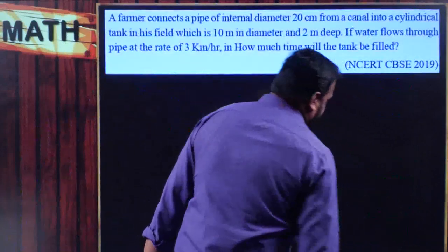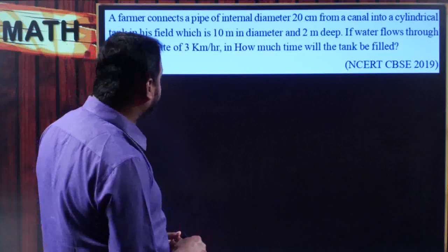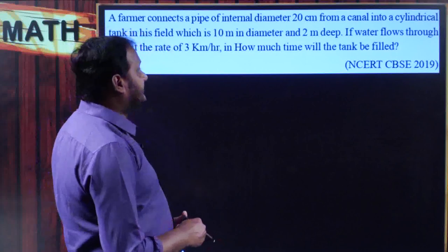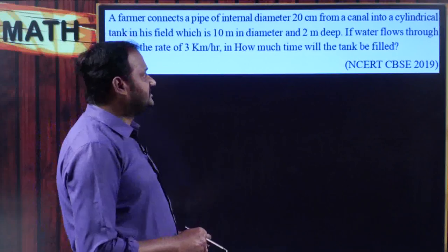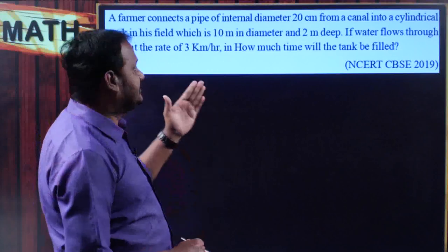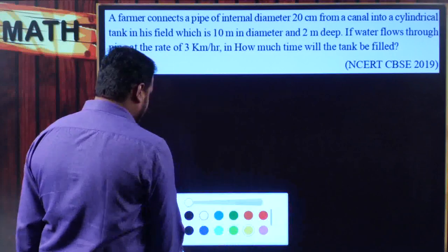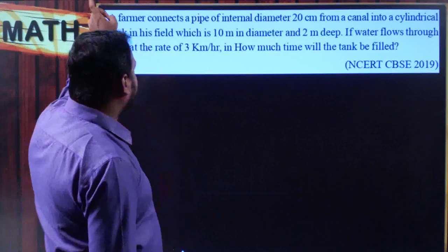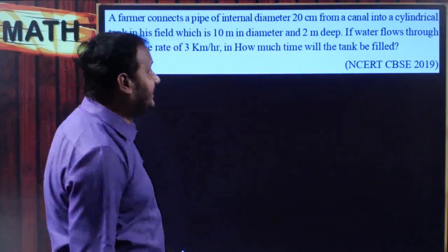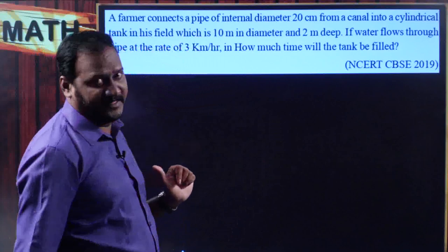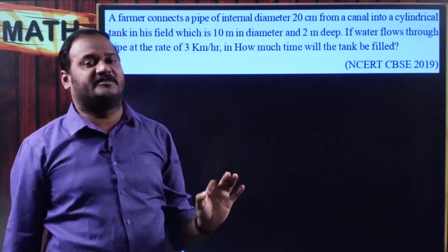Let us move on to the next problem. A farmer connects a pipe of internal diameter 20 centimeters from a canal into a cylindrical tank in his field, which is 10 meters in diameter and 2 meters deep. The shape of the pipe is a cylinder.